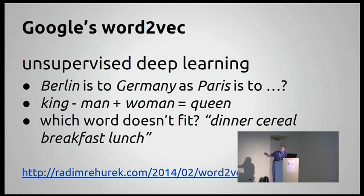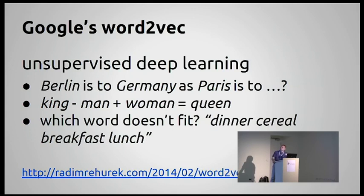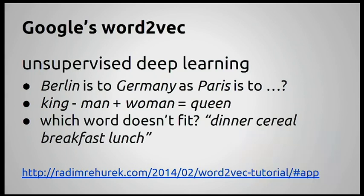Or you can ask it which of these words doesn't fit: dinner, cereal — and it should tell you cereal. The fascinating thing is there is no manual input. You just give it plain text sentences, no lists of capitals, no notion of what is food. The model automatically learns these relationships just from plain text.